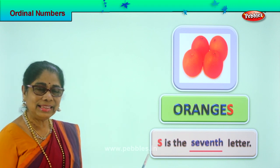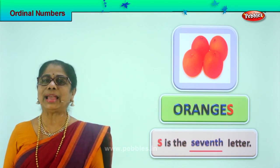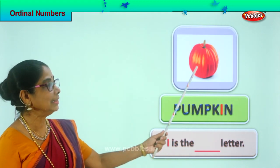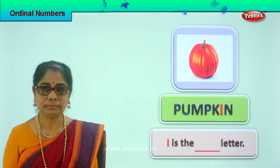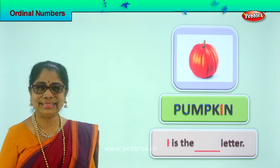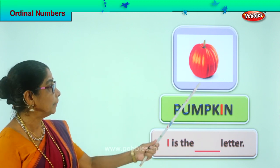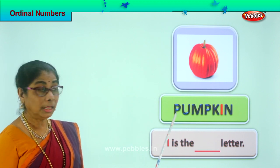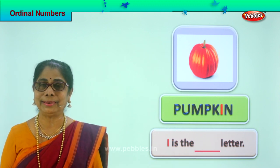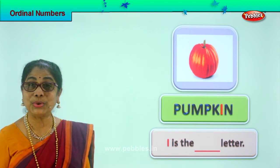Read the sentence: S is the seventh letter. Good, did you enjoy? Let's look at another picture. Look what is this — have you seen this huge big orange pumpkin? This is the pumpkin. It creeps on the ground and grows huge — it's a creeper. Spell pumpkin: P-U-M-P-K-I-N.